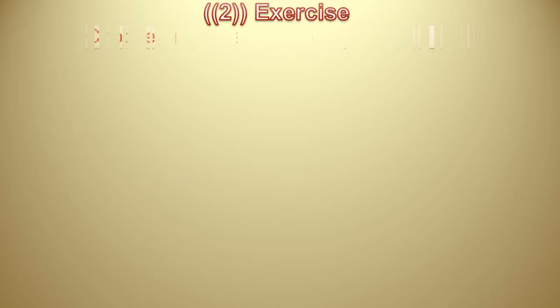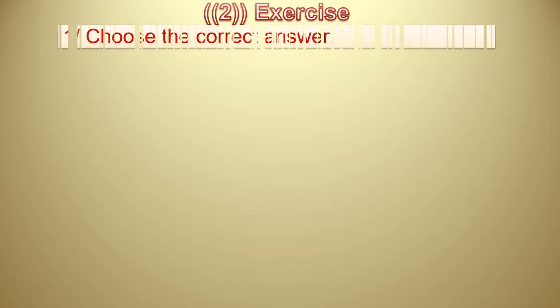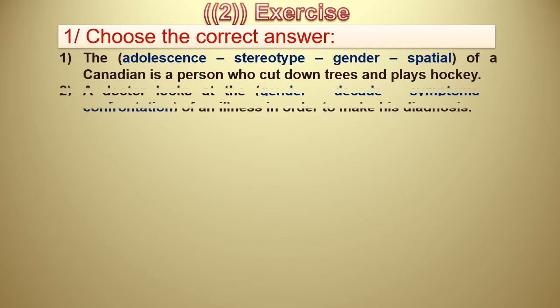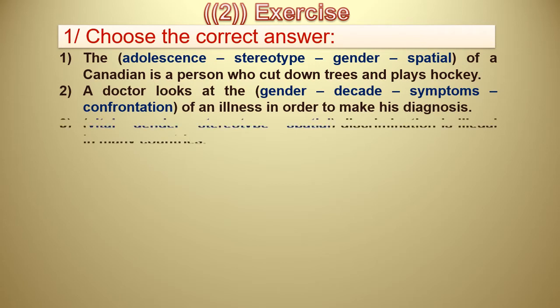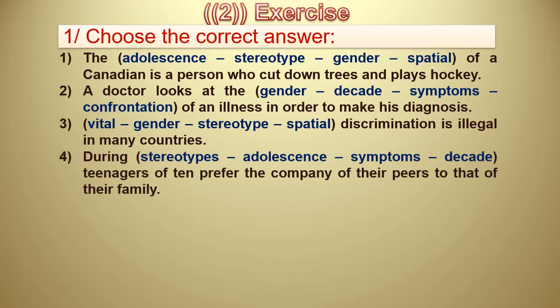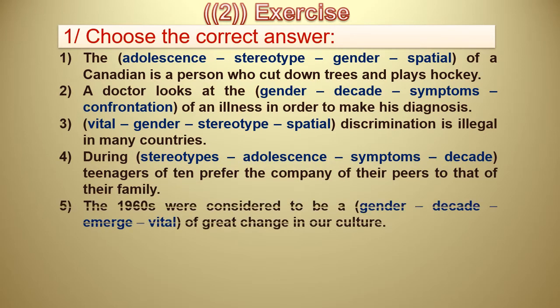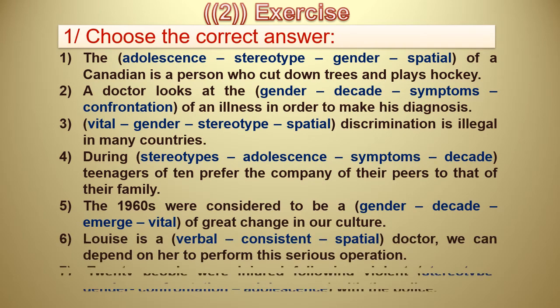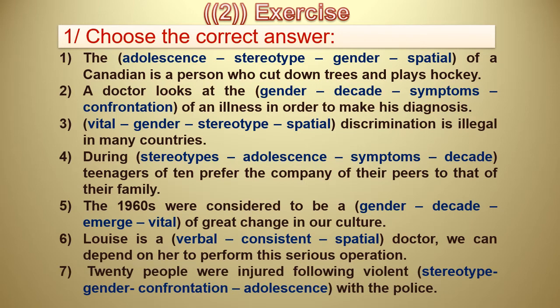Exercise number two. First question: choose the correct answer. The stereotype of a Canadian is a person who cuts down trees and plays hockey — the answer is stereotype. Number two: a doctor looks at the symptoms of an illness in order to make his diagnosis — the answer is symptoms. Number three: gender discrimination is illegal in many countries.